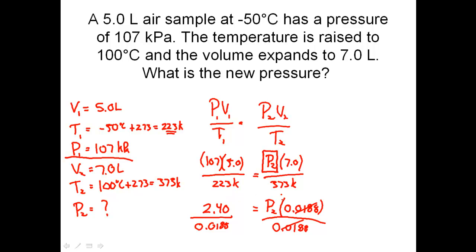And 2.40 divided by 0.0188 is going to give me a pressure of 127.7. And so my new pressure coming from this division problem is going to be equal to 127.7, and that's going to be expressed in kilopascals. That's my new pressure.